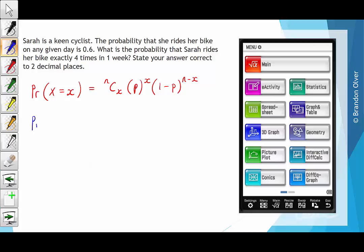In our case, we have the probability that X is equal to 4 equals the number of trials, which is 7, selecting 4 successes, times the probability of success, which is 0.6 to the power of 4 successes, times the probability of failure, which is 1 minus 0.6 to the power of 7 subtract 4.